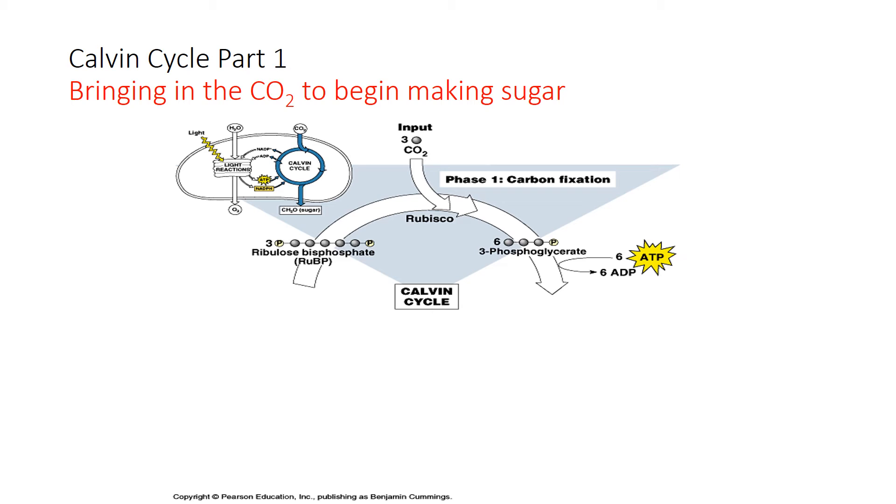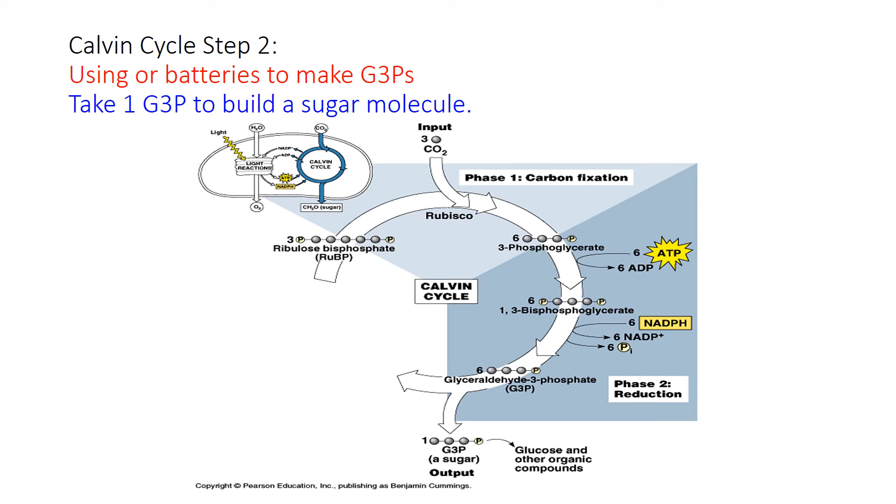And then we're going to move on to the next stage. And as you can see here, one of the things that's going to happen is we're going to use some of the energy coming from the light-dependent reaction. So here we are in phase two. That is going to be reduction. And we're going to be using the energy, or batteries, as shown in the top part of the slide, of ATP and NADPH.